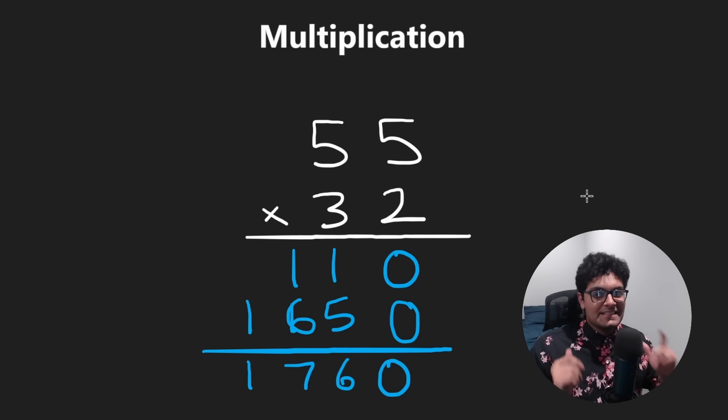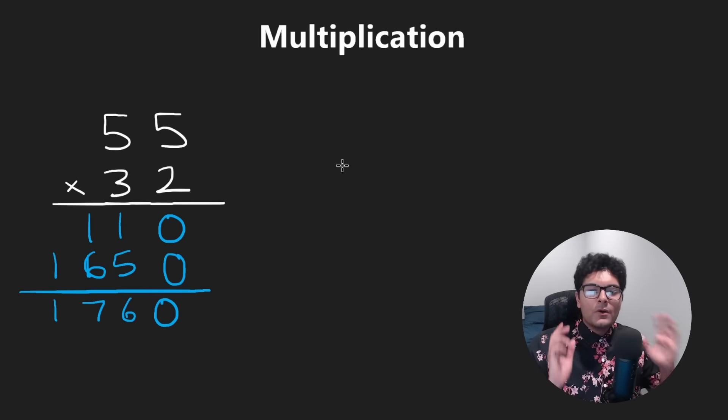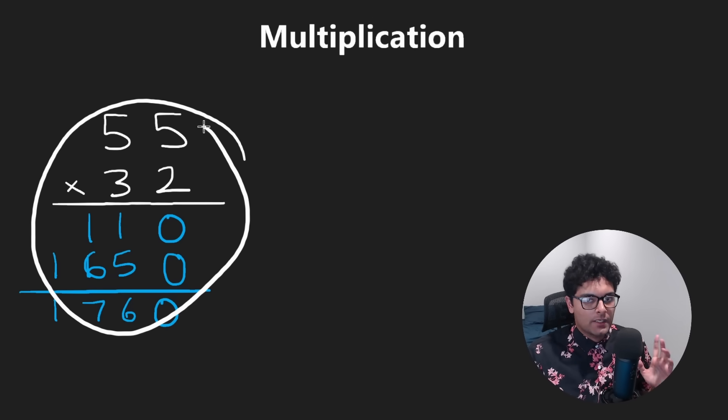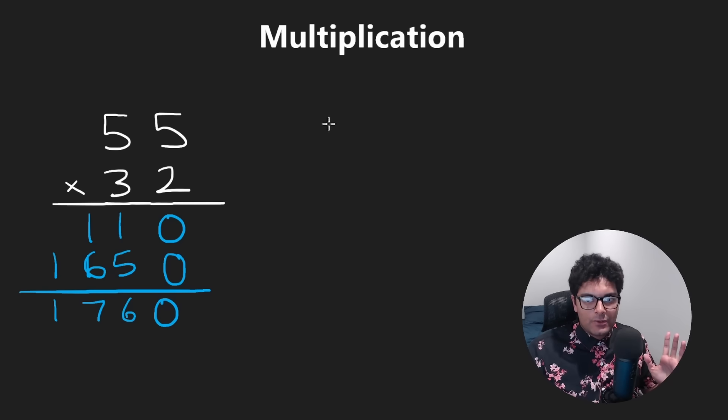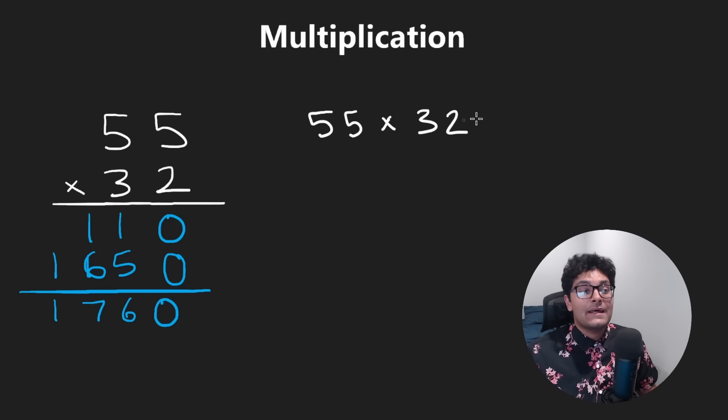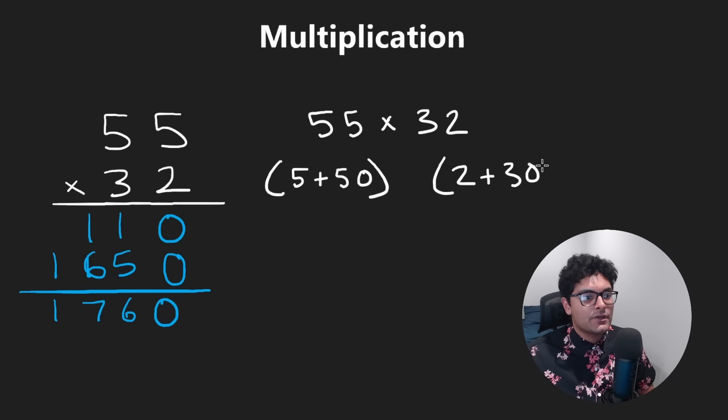Now I know what you're thinking. This is just math. How is it relevant to LeetCode? But please just hear me out. Most people don't care enough to ask why does this work. They don't care enough to notice that this is the same as writing it out like this. But this is a hard problem. So let's make it easier. This is really just 5 plus 50. This is really just 2 plus 30. Expanding it out, taking 2 times this part, we get this. Taking 30 times this part, we get this.